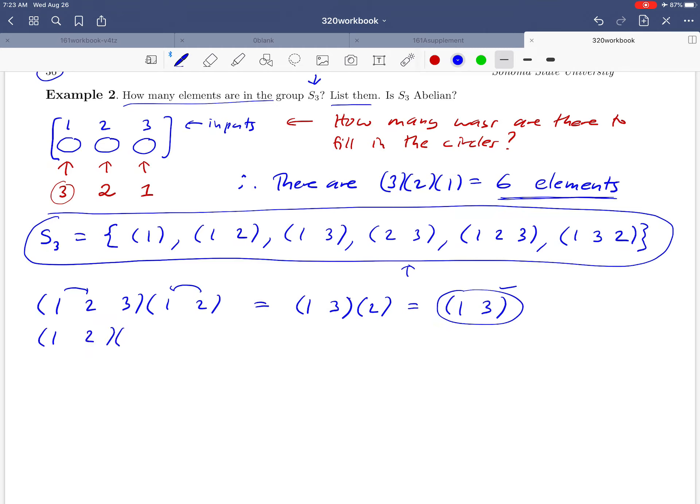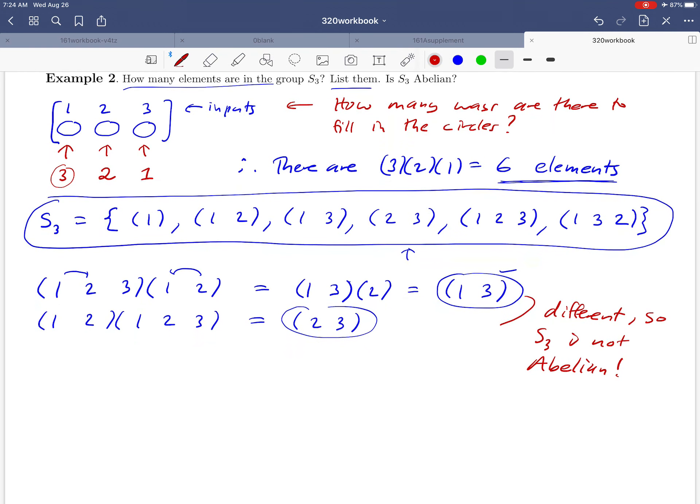So the result of the calculation (1 2 3) composed with (1 2) is this permutation, and I'm going to leave it up to you to do this calculation in the reverse order and to confirm that we get something different if you do it that way. What you should end up with is (2 3). And the fact that those two numbers are different confirms that S3 is not abelian.